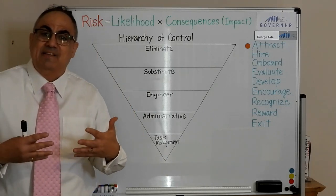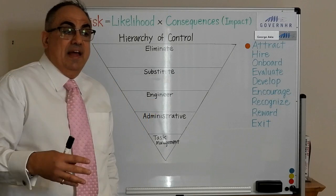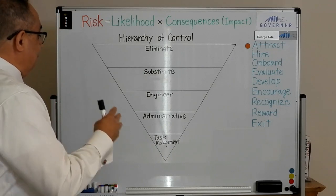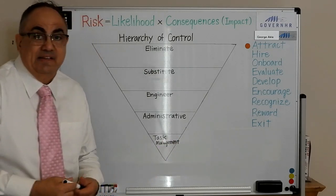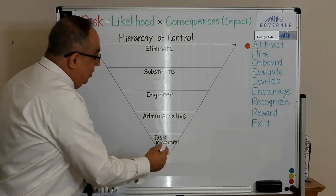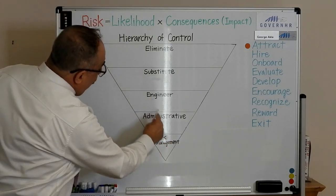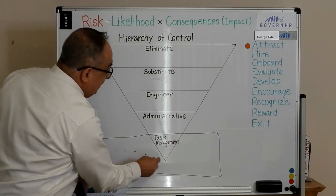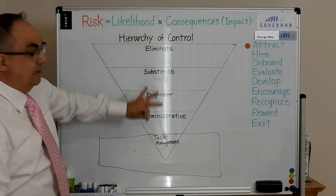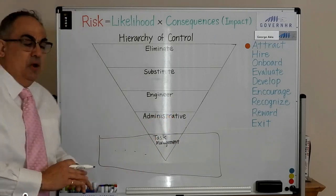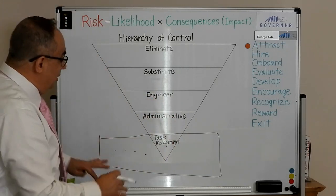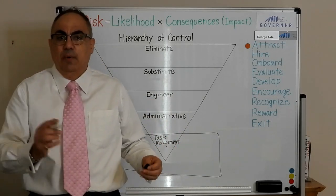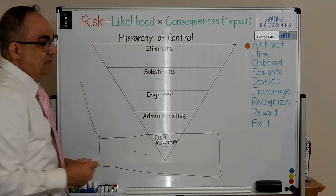The final one is task management, and unfortunately that is where a lot of organisations do most of their investment. Task management really is the checkers. They may have a poor process all the way down, but they'll invest here — 30 people to do the checking at the bottom to make sure. We know the process is broken, we know there are poor controls, we know everything else doesn't work, but we've got 30 people who will catch it at the end. And it's broken, and we pick it up and go back and start the processes again.